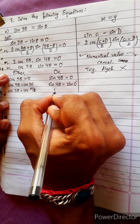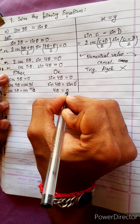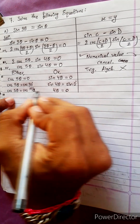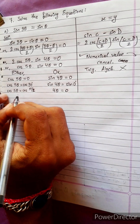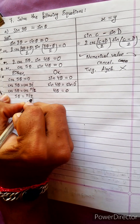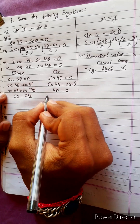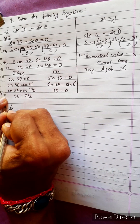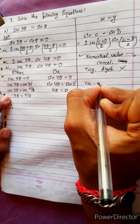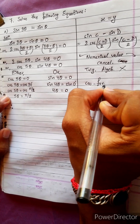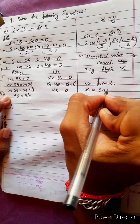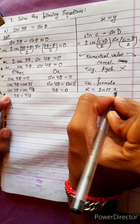sin 4θ equals 0, so 4θ equals 0. And cos 5θ equals π by 2. The cos formula is: x equals 2nπ plus or minus θ.